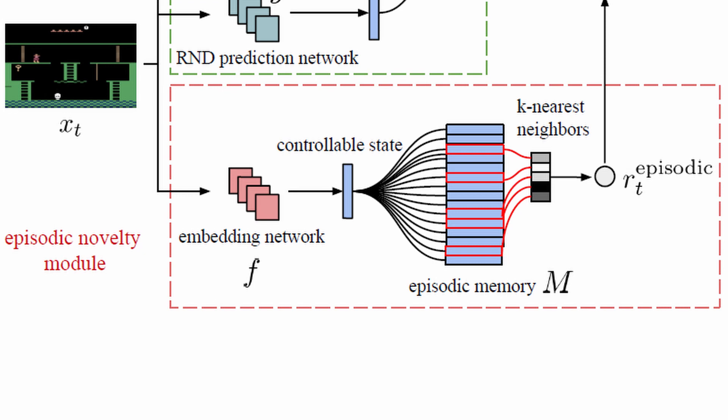The short-term intrinsic reward is calculated by measuring the distance of the embedding of the current state with all those stored in the memory buffer. So that if the current state is novel, the distance with all the other states will be high, and consequently also the intrinsic reward will be high.